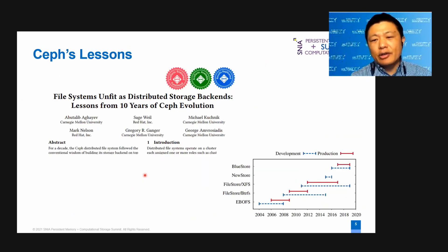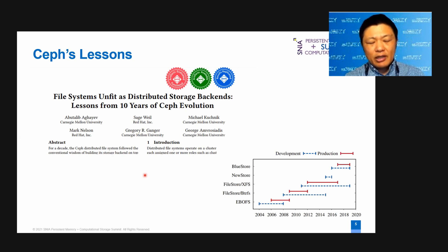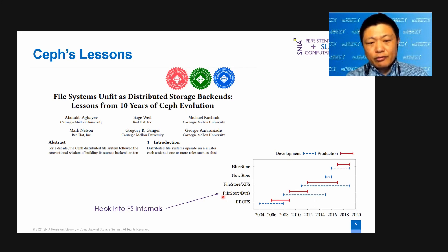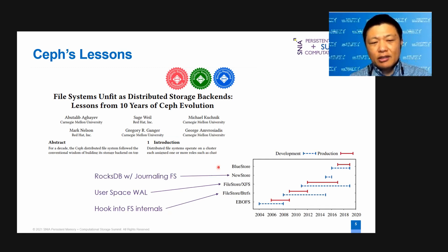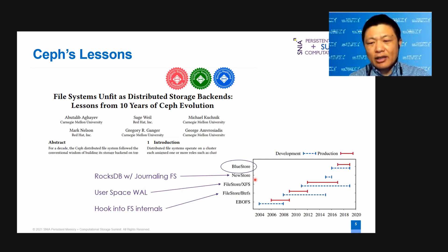This is the paper published in SOSP 2019 titled "File Systems Unfit as Distributed Storage Backends: Lessons from 10 Years of Ceph Evolution." Ceph started with EBOFS. Then in 2009 it switched to FileStore on BtrFS, hooking into file system internals trying to improve performance. Then a user-space write-ahead log on XFS was used in 2012. In 2015 they experimented with RocksDB on a journaling file system, called NewStore, but that did not go into production. In 2017 they switched to BlueStore.